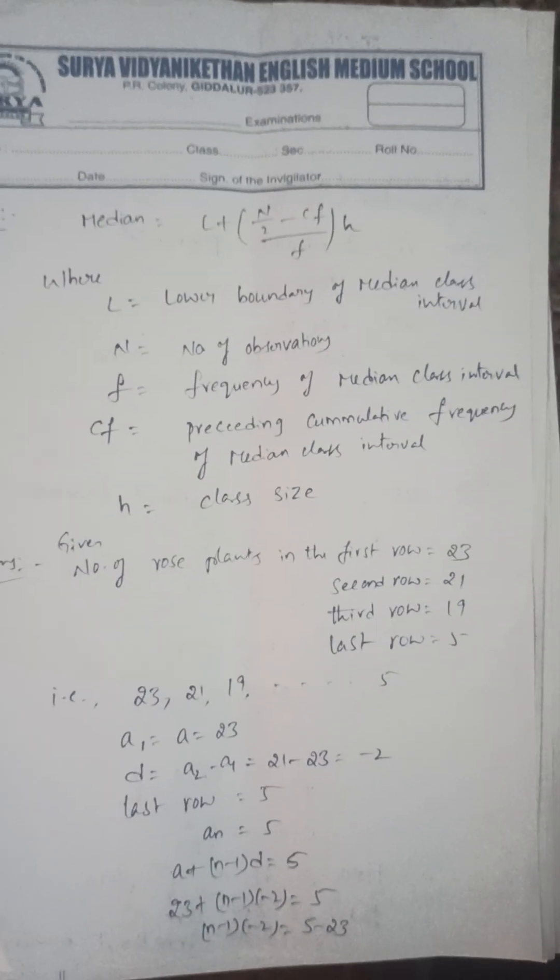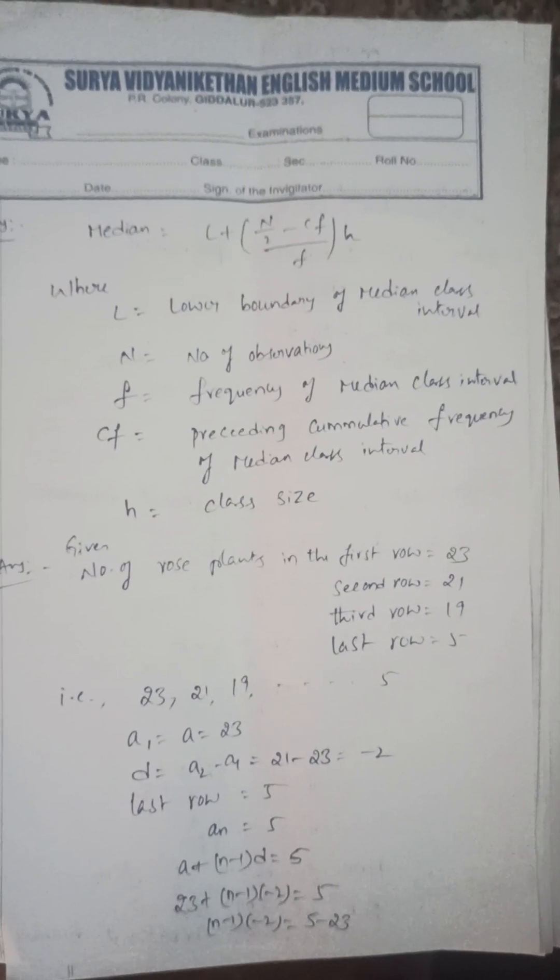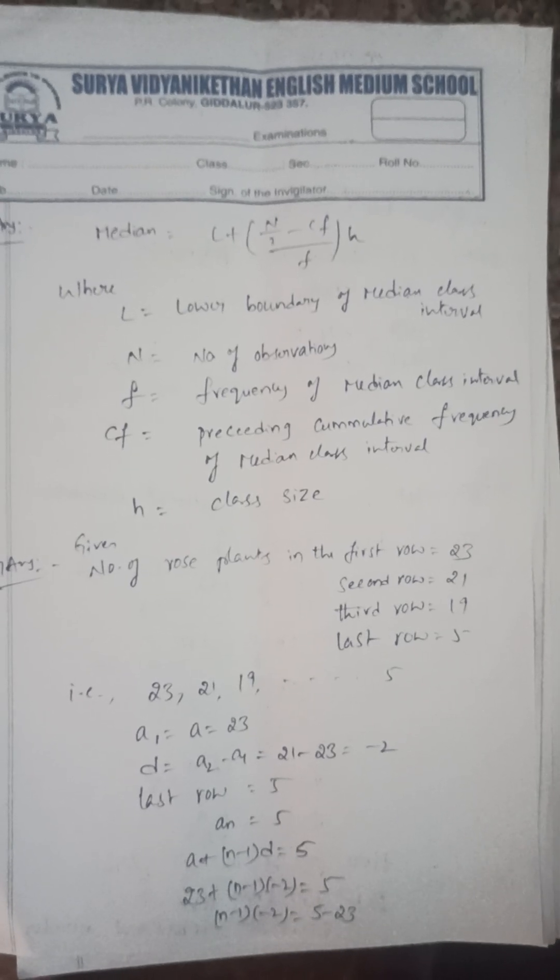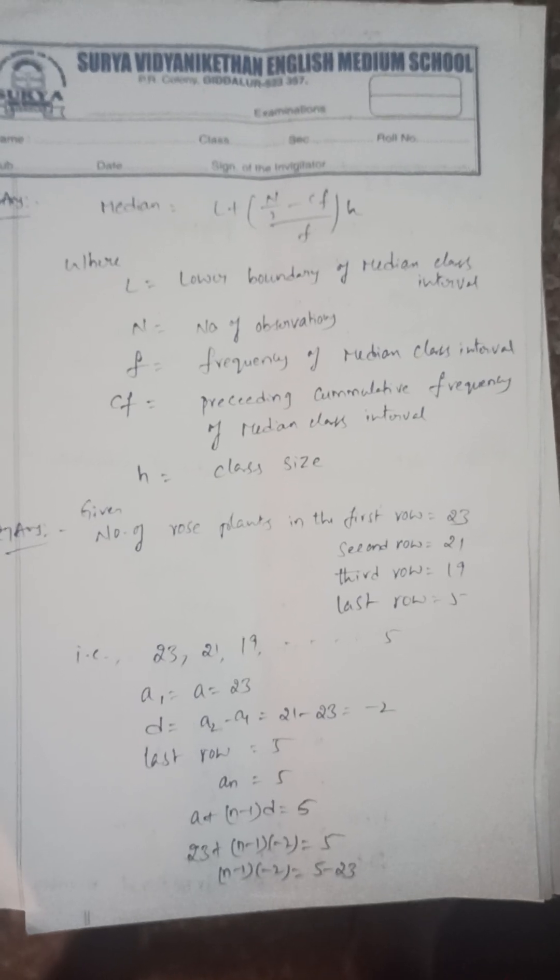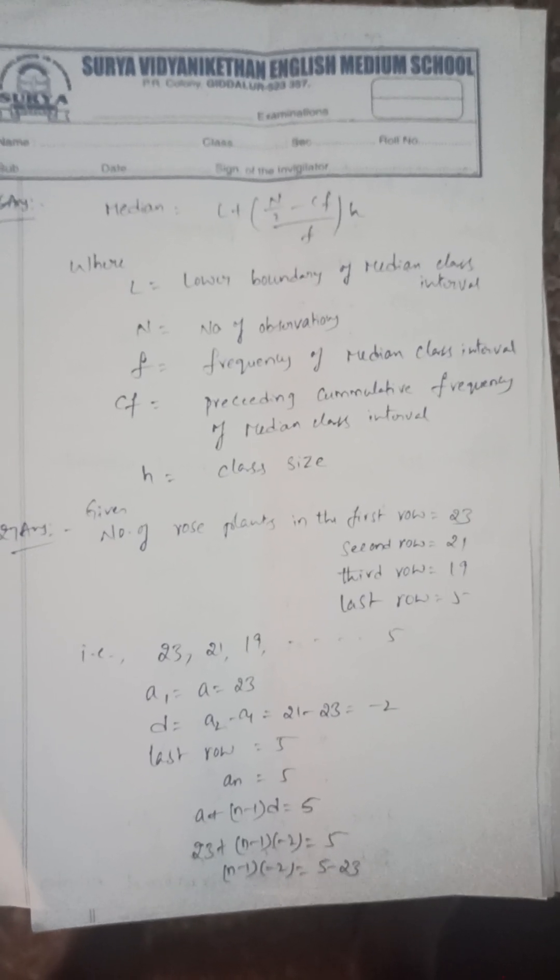Next, write the median formula and explain terms: L + (n/2 - cf)/f × h. L is the lower boundary of median class, n is the number of observations, f is frequency, cf is preceding cumulative frequency, h is class size.